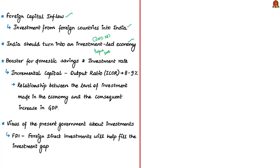The author insists that the Incremental Capital to Output Ratio (ICOR) should be at 8 to 9% to boost savings and investment rates. ICOR is basically the relationship between the level of investment made in the economy and the consequent increase in GDP — if you invest more, you get more outputs. But the author has cautioned by quoting the ongoing GDP debate, where former Chief Economic Advisor Arvind Subramanian said India is growing at only 4.5%. If the economy is actually growing at 4.5%, then the $5 trillion target becomes far more challenging.